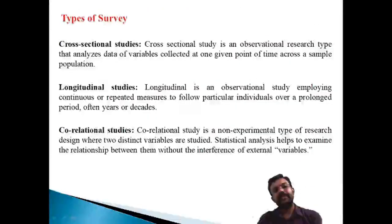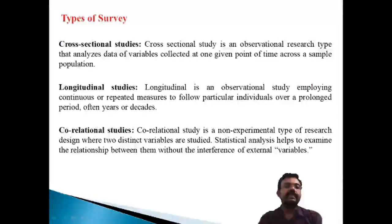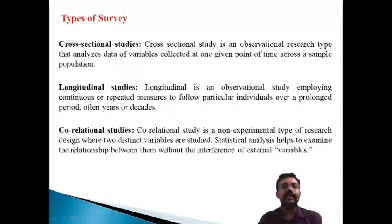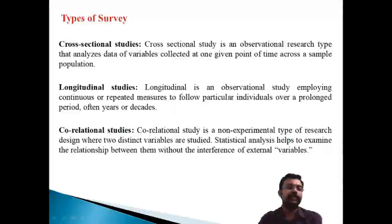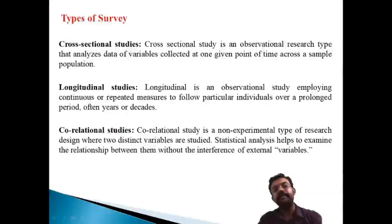Now let us discuss the different types of survey. Surveys are basically classified into three types: cross-sectional study, longitudinal study, and correlation study. Cross-sectional means it relates to a particular point in time, longitudinal means it relates to data collected over a period of time, and correlation means a non-experimental type that examines the relationship between two distinct variables. A cross-sectional study is an observational research type that analyzes data collected at one given point in time across a sample population.